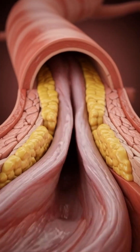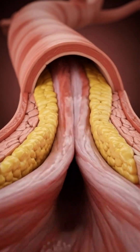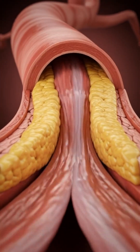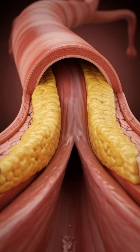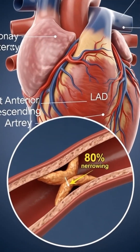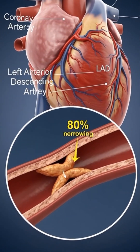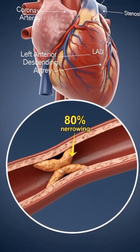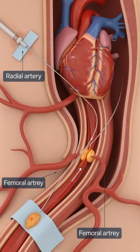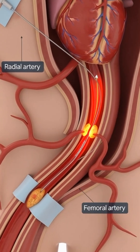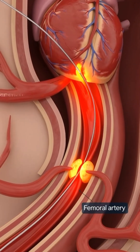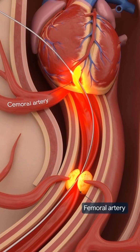When plaque builds up inside the artery, blood flow becomes narrow and restricted. When the blockage becomes dangerous, doctors perform angioplasty or place a stent. A thin catheter is guided through the blood vessel toward the blocked artery.